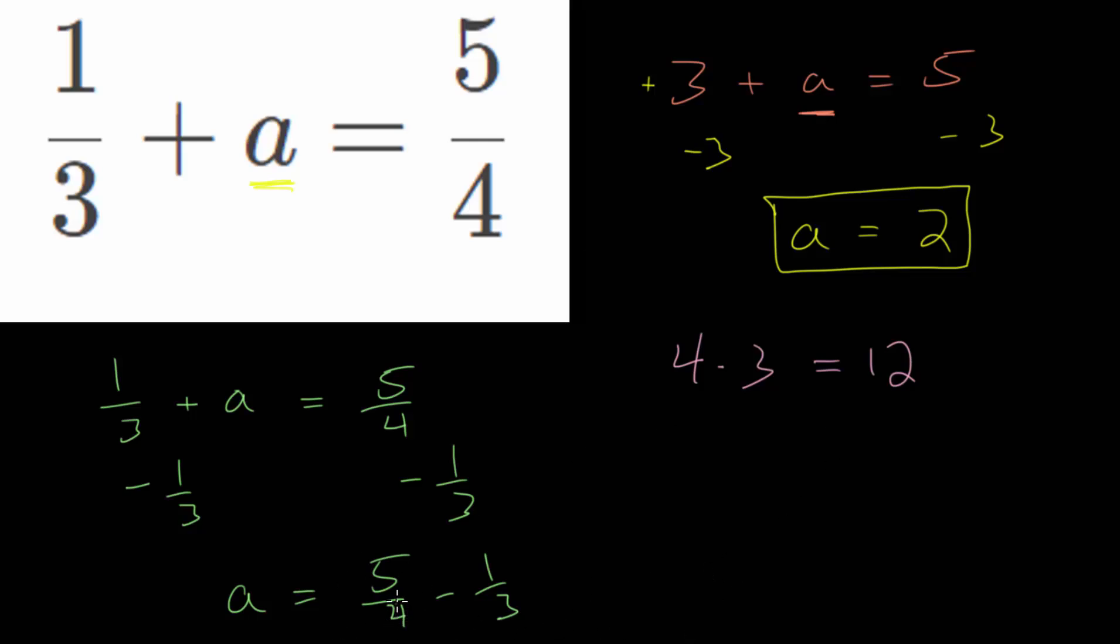But for instance, if they were 4 and 2, since 4 is a multiple of 2, we can use 4 as a denominator in that case. So sometimes, multiplying together will give you a bigger denominator than you might need. Though it will still work. So you can always use that method.